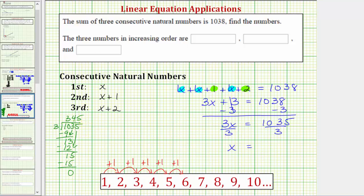The remainder is zero, and therefore the quotient equals 345. So because x equals 345, we can now determine the three consecutive natural numbers that have a sum of 1,038.